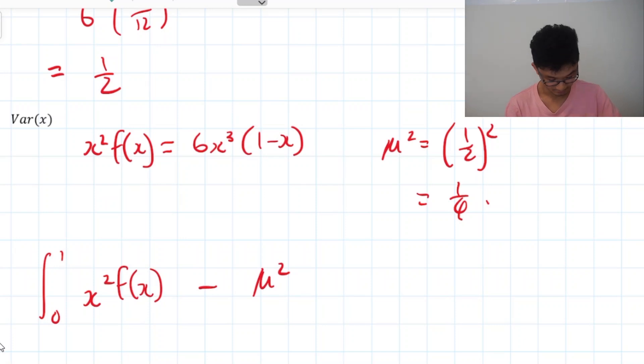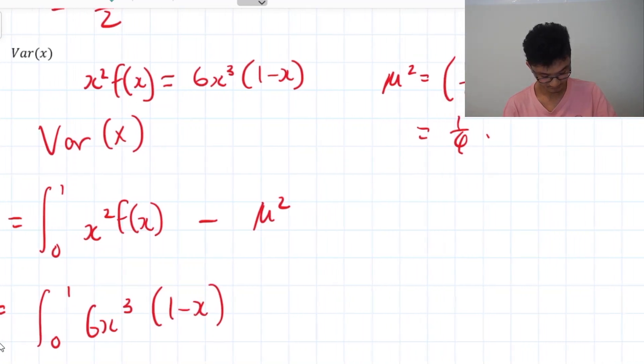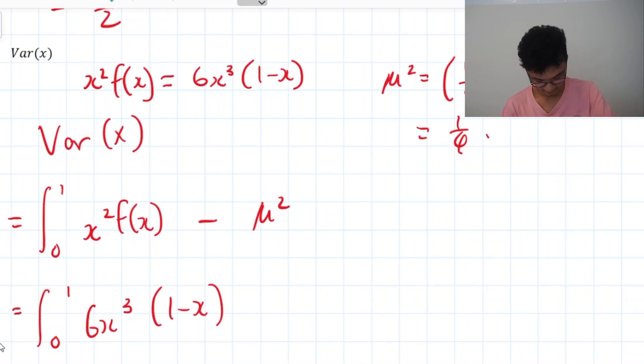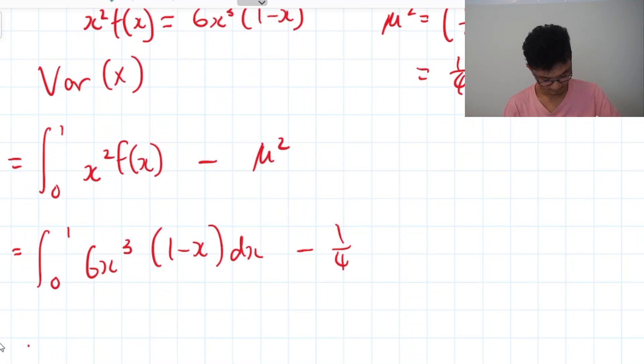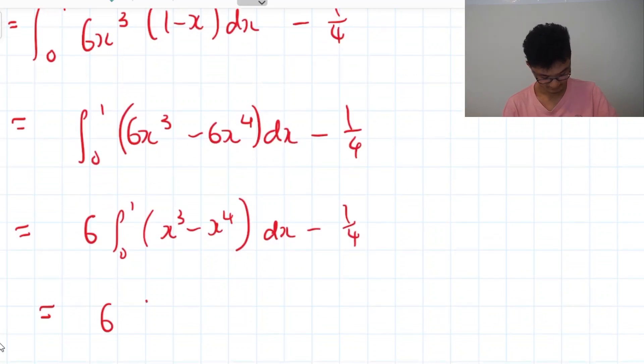So μ squared's outside that just be aware should say that that's equal to the variance. Variance of X equals zero to one so that's 6x³(1-x) take away a quarter and same idea let's expand and factorize in a second. So 6x³ minus 6x to the 4 minus quarter. Factorize out 6 again so that's going to be from zero to one x³ minus x to the 4. And go ahead and integrate that.